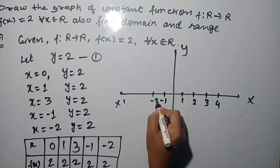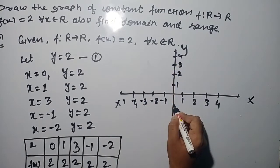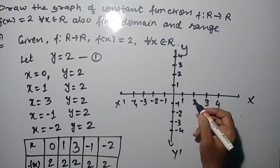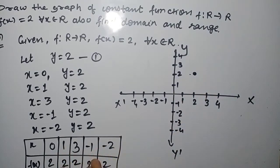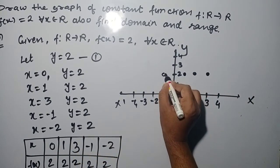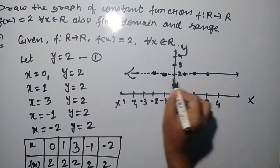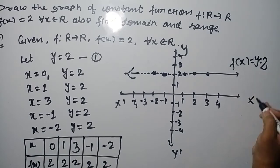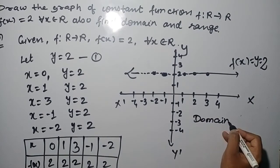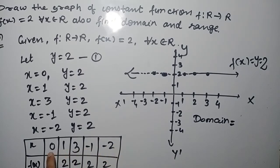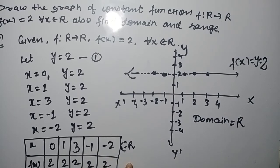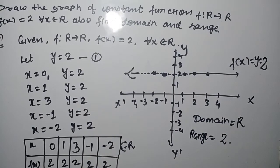Putting the numbers on the x-axis and y-axis. Just locate the points: (0,2), (1,2), (3,2), (-1,2), and (-2,2). Students, you can see that these points are linear — the line of this function is parallel to the x-axis. So the domain is the input values: all real numbers R. And the output is constant, which is 2.